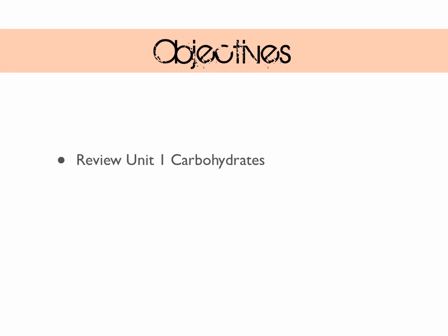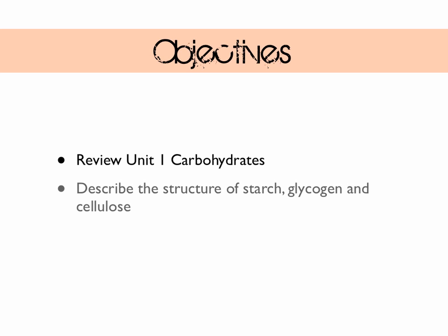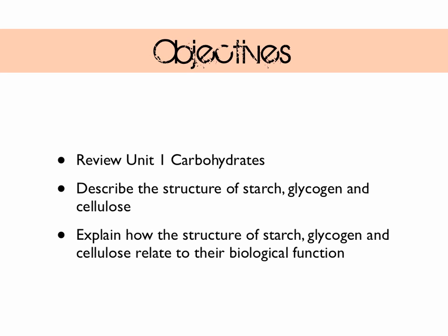Let's look at our objectives. Firstly we're going to want to review Unit 1 Carbohydrates. Then we're going to be able to describe the structure of starch, glycogen and cellulose. And finally we're going to explain how the structure of starch, glycogen and cellulose relates to their biological function.